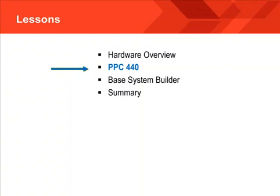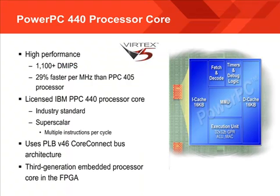Now let's take a closer look at the PowerPC 440 processor. This diagram shows the PowerPC processor that is part of the Vertex 5 FXT device family. It is a newer version of the PowerPC 405 that has been part of the Vertex 4 FX family. The 440 is approximately a third faster than the 405, and it is a licensed IBM superscalar processor that can execute multiple instructions per clock cycle. The 440 has twice the cache size of the 405 and twice the PLB bandwidth. The PLB V46 supports 120 bits of data while the 405's PLB bus supported only 64 bits.